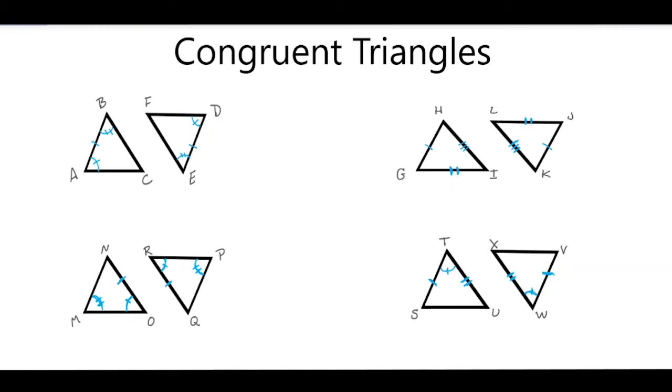So, here I have some pairs of triangles, and I need to write a congruent statement for each, and then I need to name the postulate or theorem that I used.